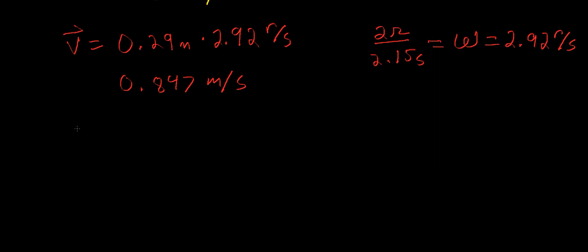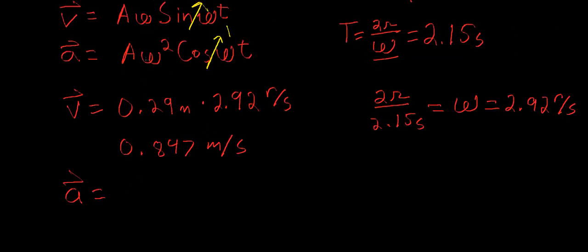Now for our max acceleration, we have the amplitude times our angular velocity squared. Our amplitude is 0.29 meters, our angular velocity squared is 2.92 radians per second squared, and this will equal roughly 2.48 meters per second squared. I'll go ahead and box these.